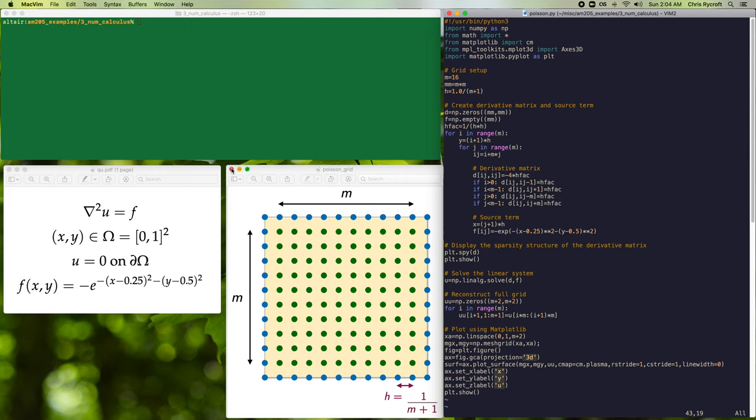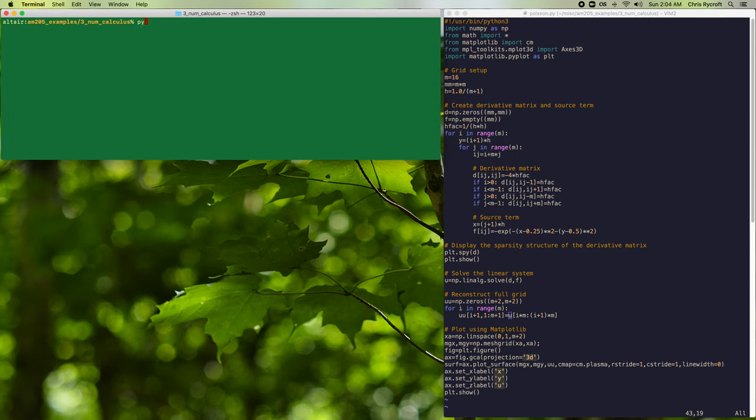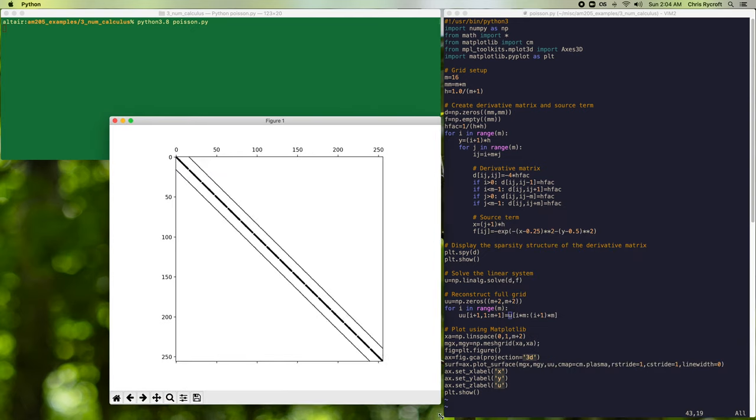So let me now go ahead and run this program. So we first see the sparsity structure of our derivative matrix. And our derivative matrix will be of size 256 by 256. And down the middle of this matrix we see that there is this tri-diagonal structure, and we have terms on the diagonal corresponding to our minus 4 times h fact entries.